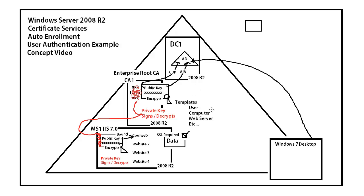We can issue a user certificate and we can issue computer certificates for authentication. A user certificate would be like your driver's license. A computer certificate would be more like the license on your car — because everybody in that car is covered since the license is good for the car and anyone in it. The user certificate is for the individual user. The driver's license will be in the car because it's in your possession — same thing with the user certificate: it's on the computer, but it's tied to the user, not the computer.